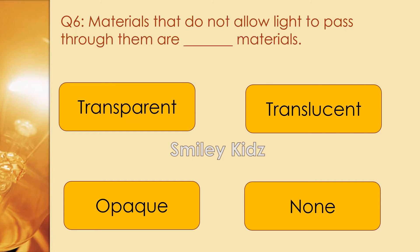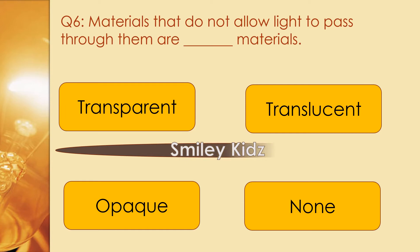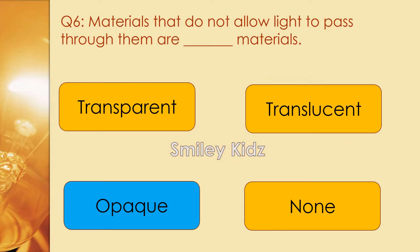Question number 6. Materials that do not allow light to pass through them are called dash materials. Options are transparent, translucent, opaque, and none. The right answer is opaque. Materials that do not allow light to pass through them are called opaque materials.